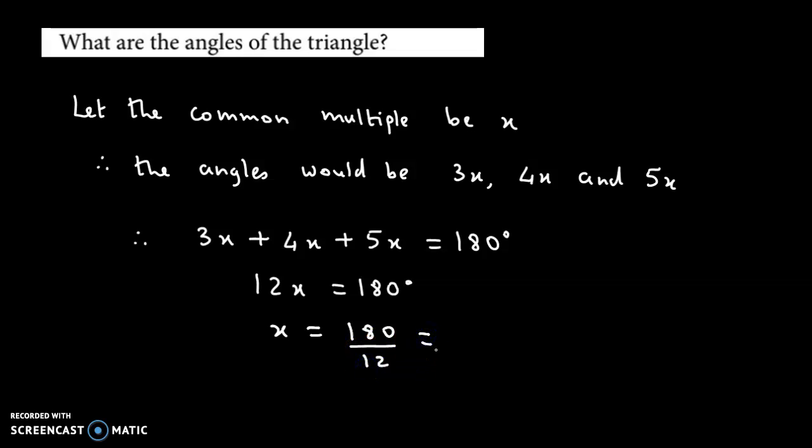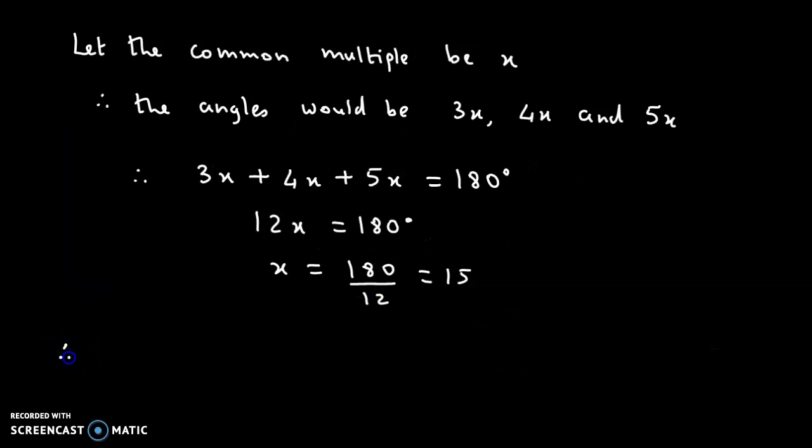Let's perform the division. So 180/12 = 15. Now we could easily obtain the angles. Therefore, the angles are: first one is 3x, so that's 3 × 15, which would be 45°.